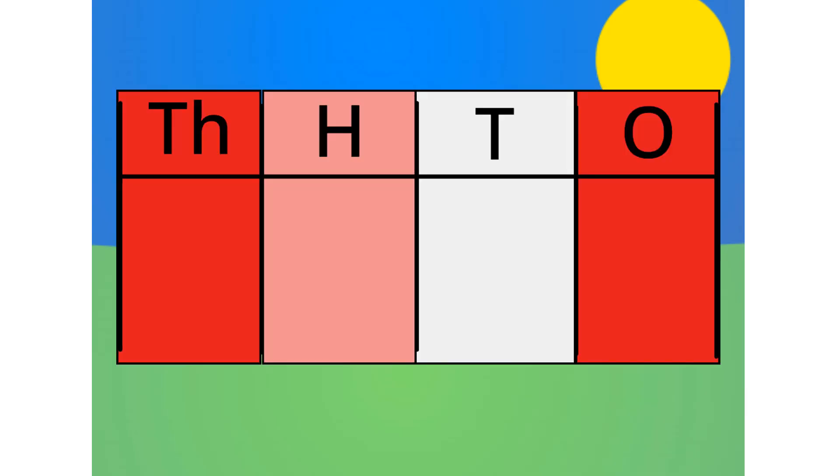Do you notice anything with this table? Correct. The number multiplies by 10 each time it goes left one column. Because it multiplies by 10 each time, we call this system base 10.